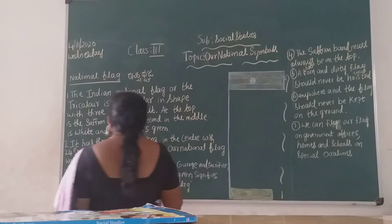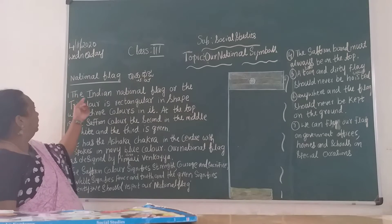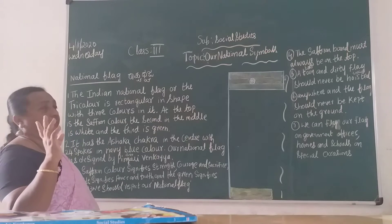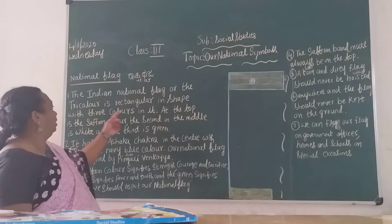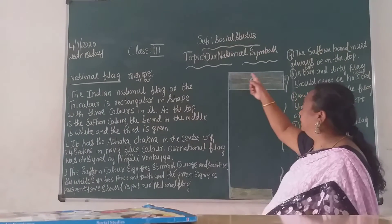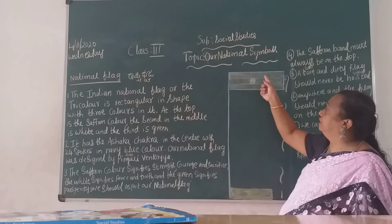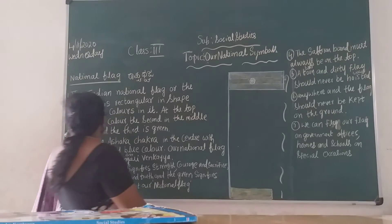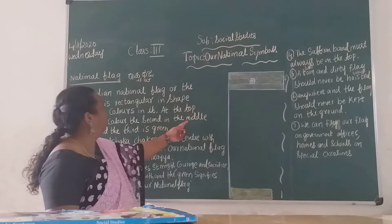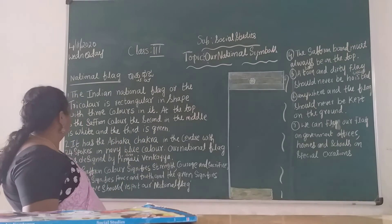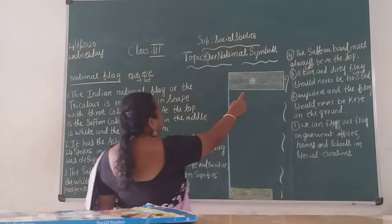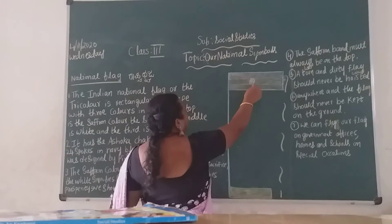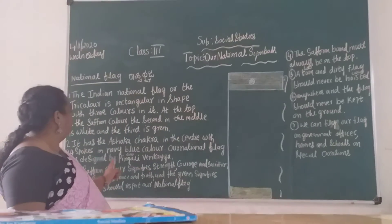Let me teach you again about the national flag. It is rectangular in shape with three colors: saffron at the top, white in the middle, and green at the bottom. See this picture — our national flag. It has the Ashoka Chakra in the center with 24 spokes in navy blue color. Our national flag was designed by Pingali Venkaiah.